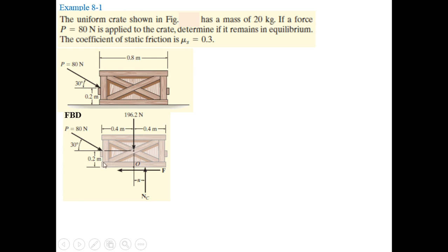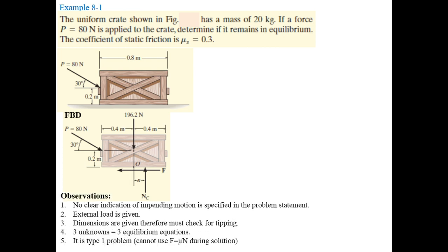There is an external load of 50 Newtons making an angle of 30 degrees with the horizontal, which must also be shown. Since the dimensions of the crate are specified, we show the normal reaction at a distance x from the center of gravity. This is because we need to check the condition for tipping as well. We will estimate this x when we check the tipping condition.